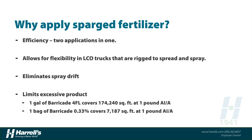Whereas when you buy one 50-pound bag of Barricade, applied at the equivalent rate of one pound of active ingredient per acre, one bag covers just over 7,000 square feet. So if you buy one gallon, you're committed to covering 174,000 square feet — but if your business only has 25,000–50,000 square feet, that's a lot of extra inventory sitting on the shelf until the next pre-emergent application. Sparging gives you more flexibility in matching product size to the area being treated.